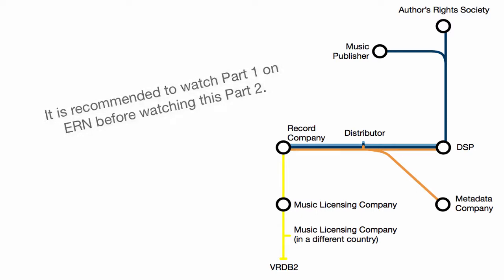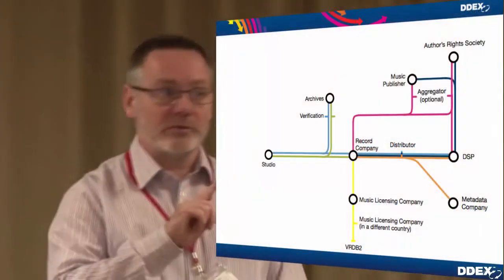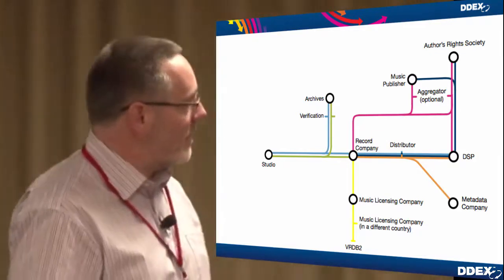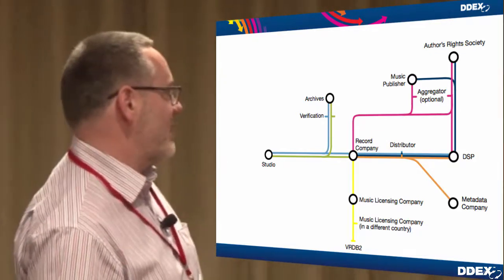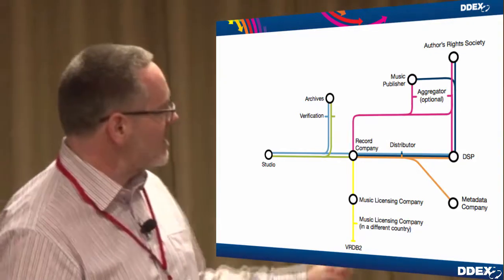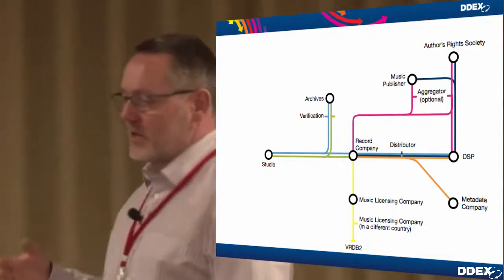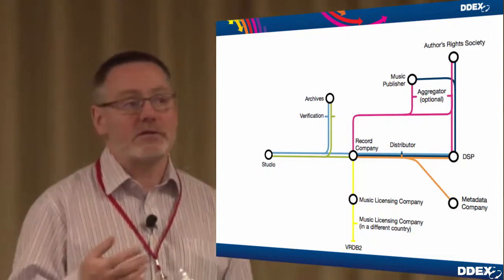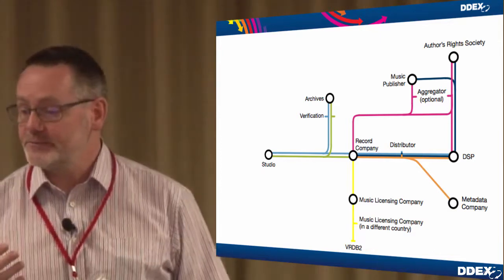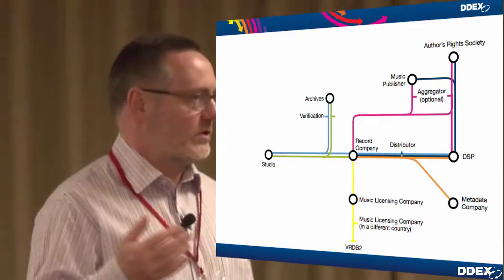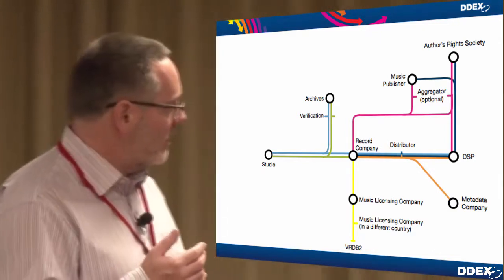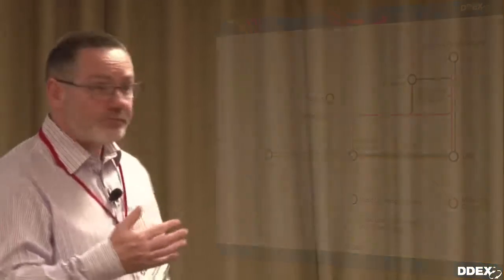Coming back to this diagram, you'll find there's now another line in there, in nice pink or red, for communication between record companies, music publishers and author societies, or potentially also via some aggregators that may be involved there, and also the ESPs. And that is about talking about musical works.